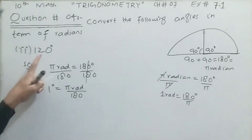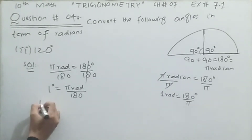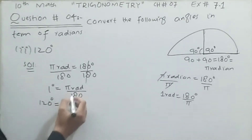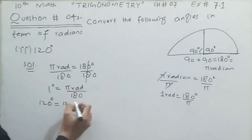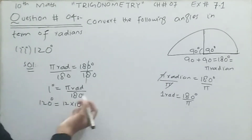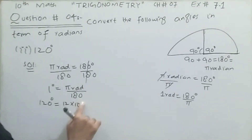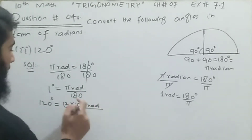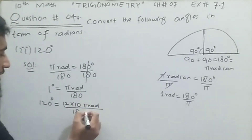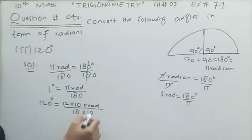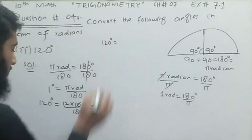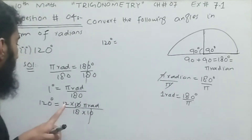Since we need 120 degrees, I will multiply 120 to both sides. So 120 degrees equals 120π radian divided by 180. Now 120 can be written as 12 × 10 and 180 as 18 × 10, so the 10 cancels out, leaving us with 12π divided by 18.